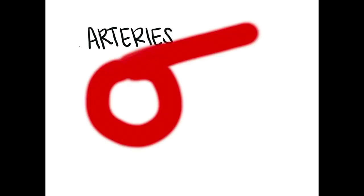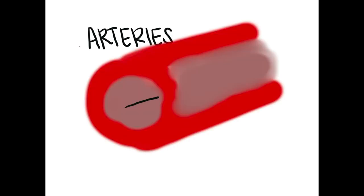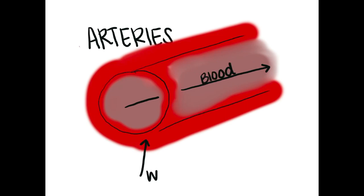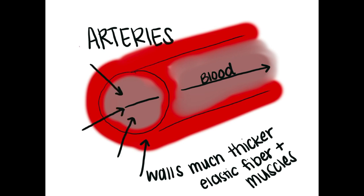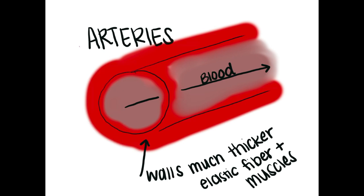Now we need to talk about the arteries. In comparison to the capillaries, the arteries are much thicker in terms of diameter and in terms of their walls. Instead of being one cell thick, the arteries are made of elastic fibers and thick muscles that can move.